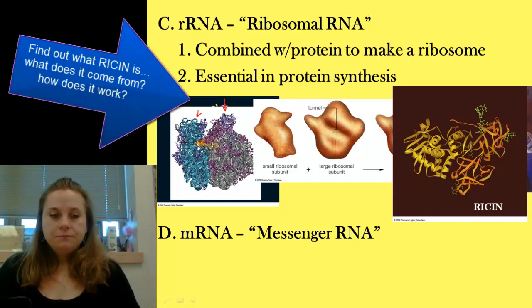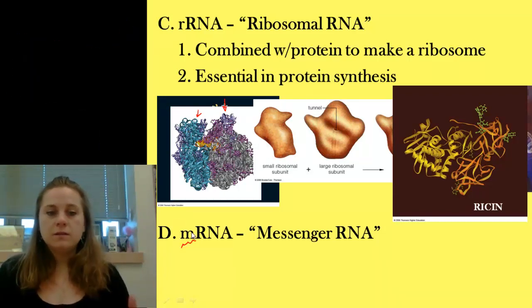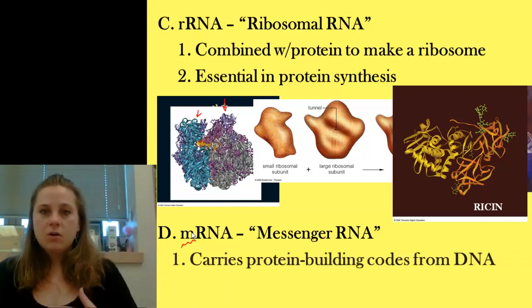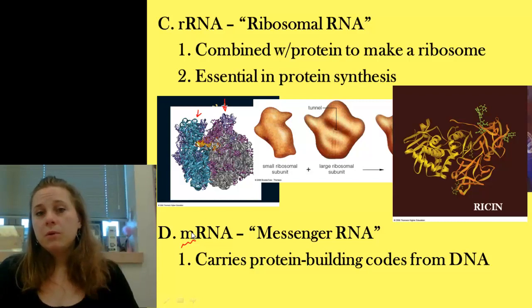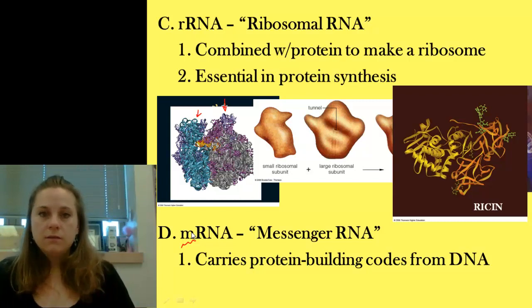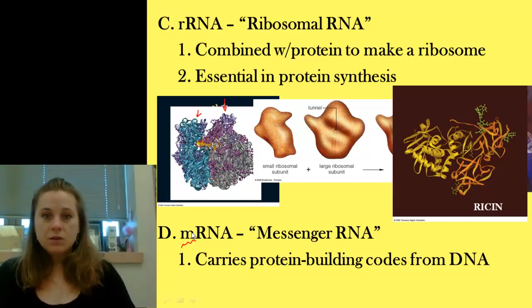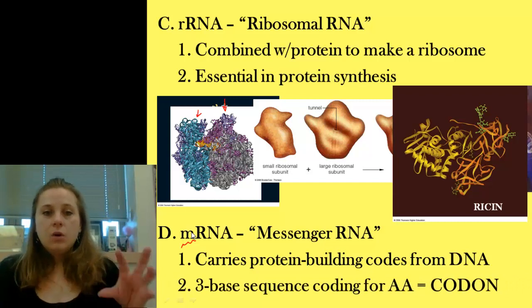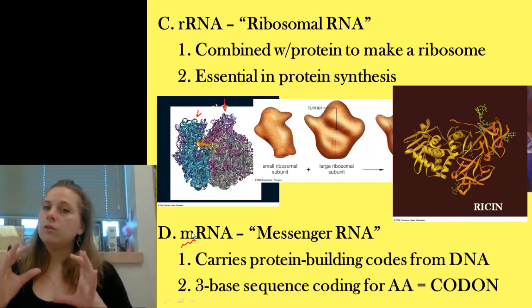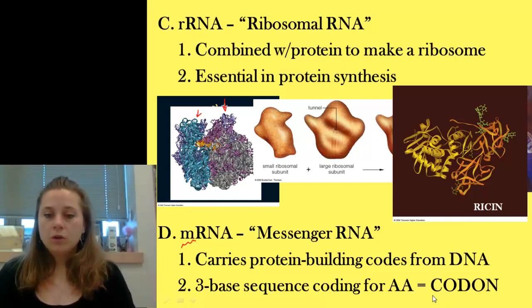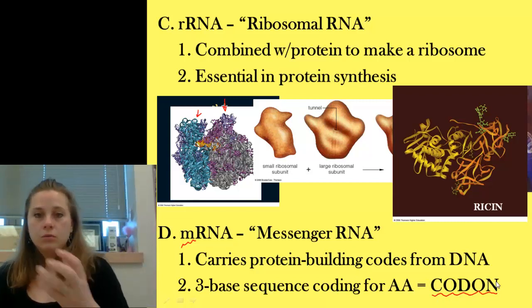Messenger RNA — mRNA — is a big deal. This is the RNA that takes the genetic code from the DNA, built directly from the coding gene on DNA, and is what's going to ultimately be threaded through the ribosome. It takes the information down to the ribosomes to build the protein. Just like DNA is read in three-base chunks called triplets, the complementary three-base sequences on RNA are called codons, and each one of those codons codes for a particular amino acid.